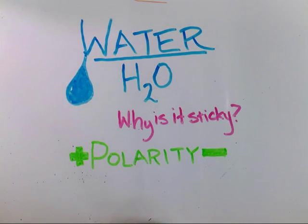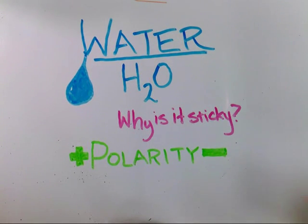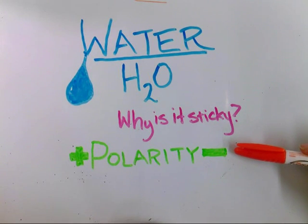So, water. It sticks to a lot of stuff. It makes water droplets. It sticks to our windows. It comes down as little droplets in rain. So why does it do that? Well, it's a simple thing. This word right here, polarity. Let's take a look at it.